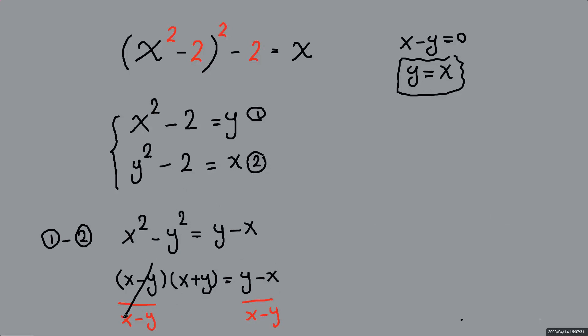So now I am allowed to go and divide both sides by this. This will be 1, this will be negative 1. So we're going to have x plus y equals negative 1. So y would be negative 1 minus x.